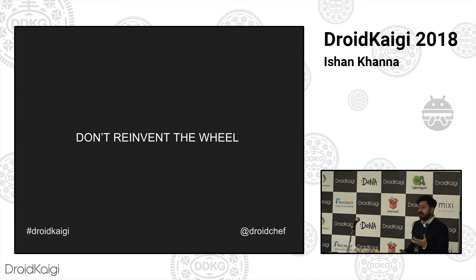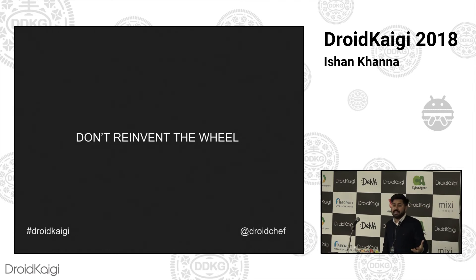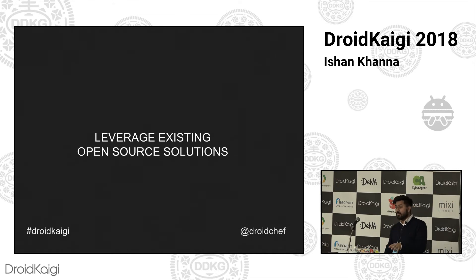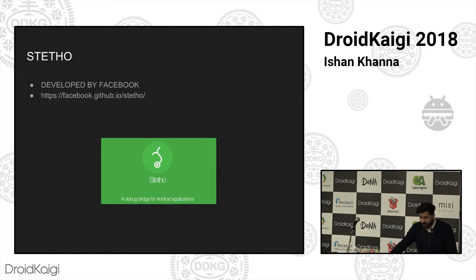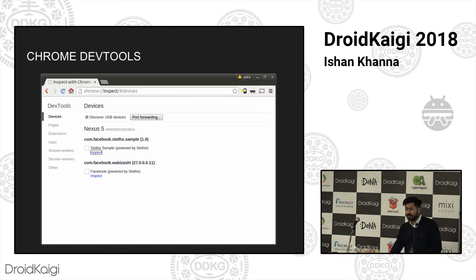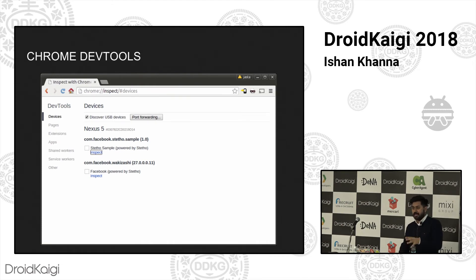Don't reinvent the wheel. Most of the common scenarios I talked about — some other person would have faced them and might already have a solution. Try to reuse that. Try to Google it before writing it on your own. That's where open source comes into play. Leveraging existing open source solutions is the key here. The first one is Stetho — a really powerful tool developed by Facebook, completely open source. This will allow you to do a lot of stuff that you might otherwise struggle doing with the toolset provided by Google. All you need to do is just integrate Stetho in your app. You open Chrome DevTools, go to inspect, click inspect, and it opens Chrome DevTools with a lot of tabs.